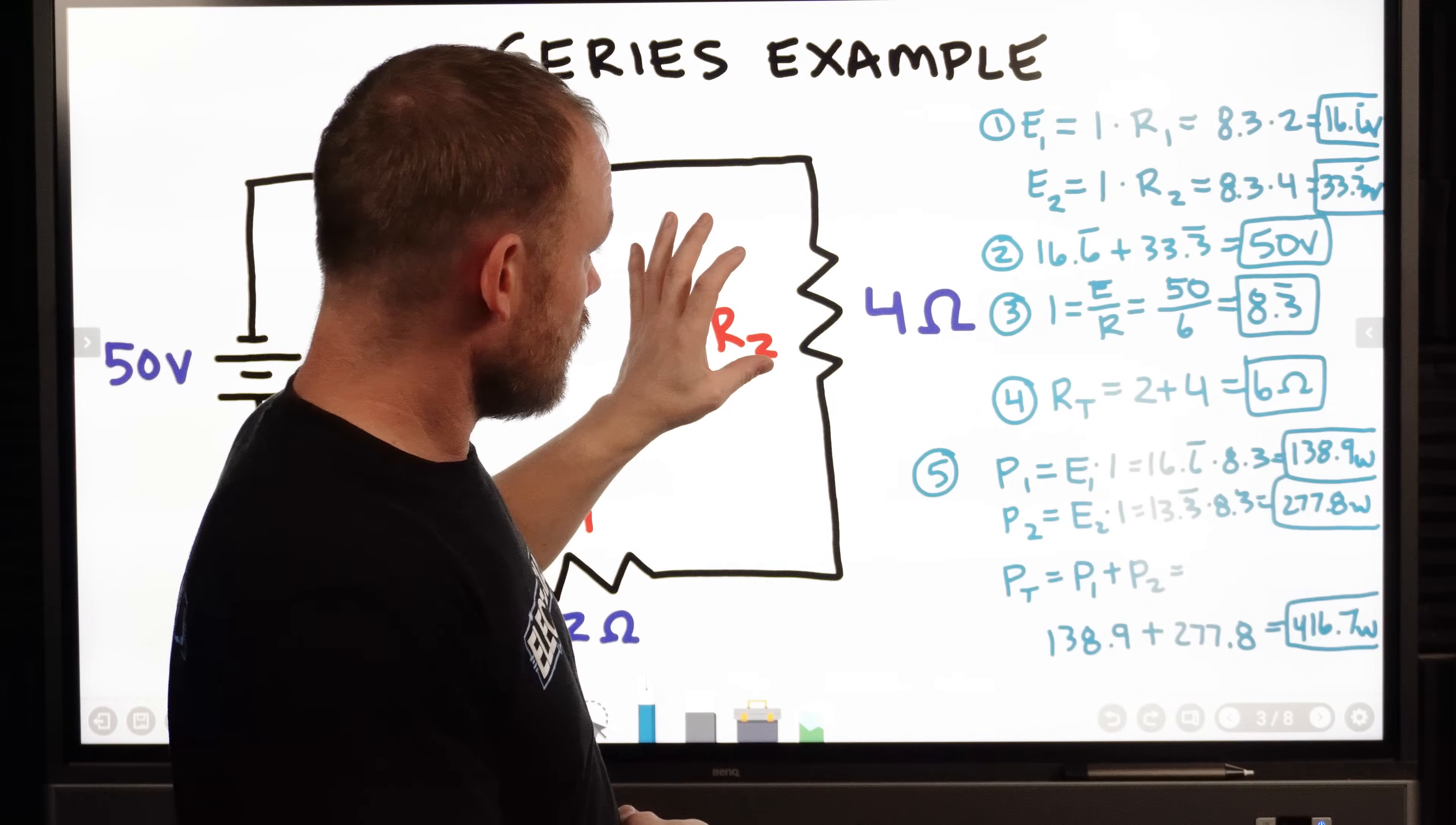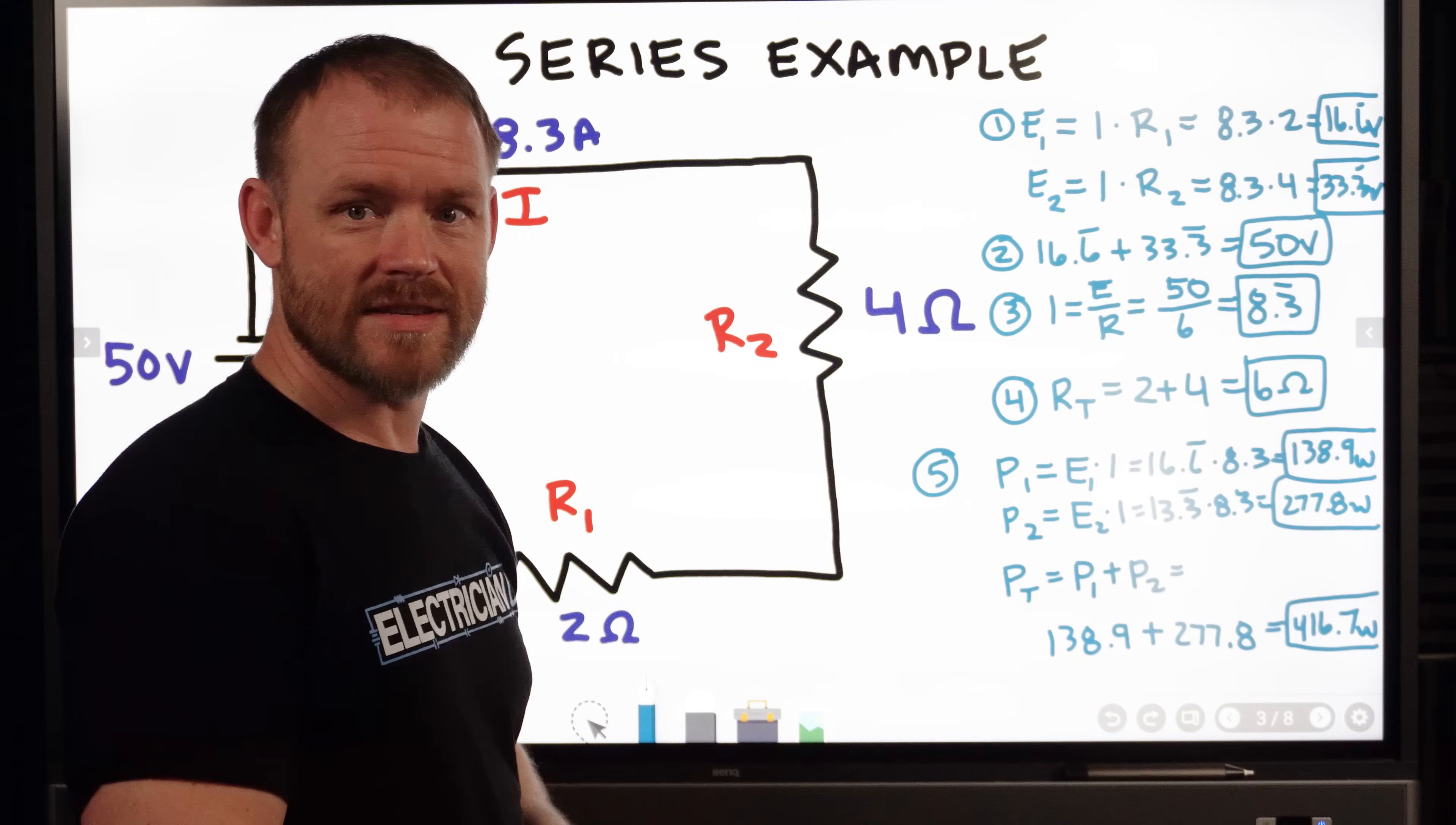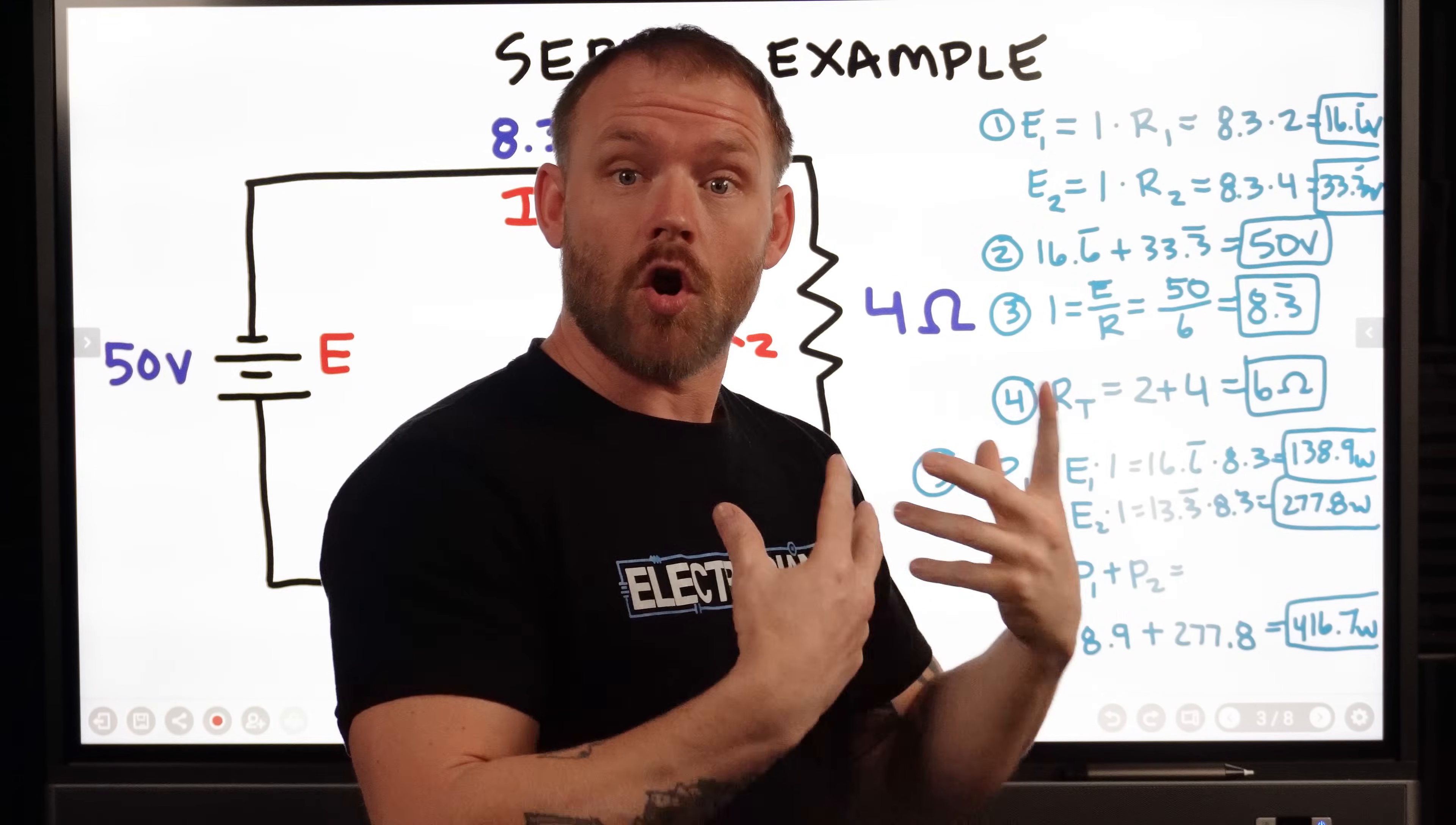Then if we go to our second resistor, we still have a 50 volt power supply. We still have 8.3 amps, but R2 is 4 ohms. So we're going to multiply amperage, 8.3, times 4 ohms, and we get a 33.3 volt drop across that resistor. It's a larger resistor, so there's going to be a more extreme voltage drop. And you can see it's literally twice the voltage drop of the other resistor, which is half the size. So the math works out nicely. Twice as much resistance, twice as much voltage drop.